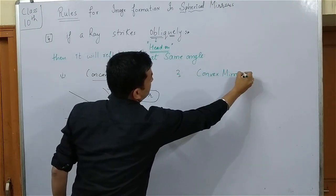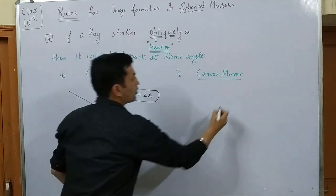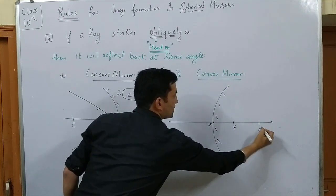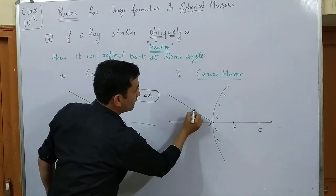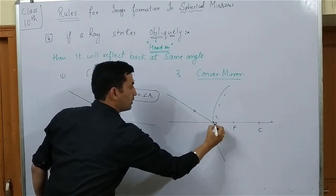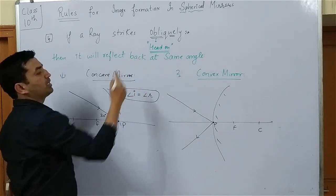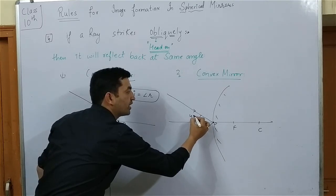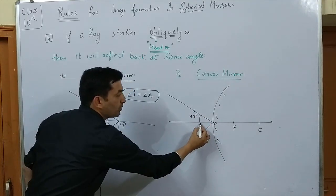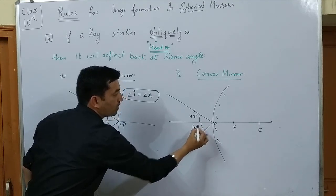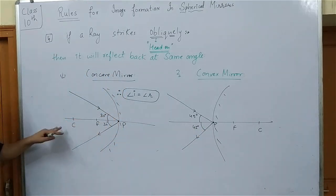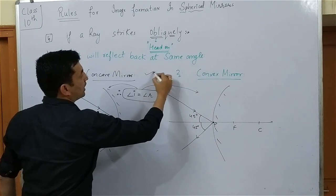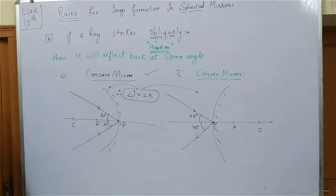The same rule applies for the convex mirror. This point is the pole, this point is the focus, and this point is the center of curvature. A ray comes obliquely — say at 45 degrees — and you can easily predict the reflected ray will also be at 45 degrees. Both concave and convex mirror diagrams follow the basic principle of reflection: angle i equals angle r.